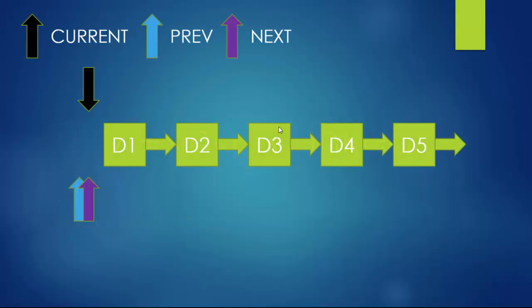To begin, you obviously need a linked list first. You create a function, and inside that function you'll have three node pointers: current, prev, and next. As the names suggest, current points to the node you're currently dealing with, prev points to the previous node relative to current, and next points to the next node relative to current. Current is the main controller of everything. You initialize all of them to null.